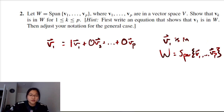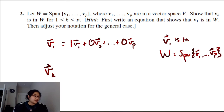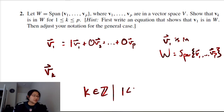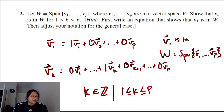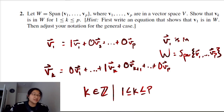In general, we can write v_k = 0·v₁ + ··· + 1·v_k + 0·v_{k+1} + ··· + 0·v_p, which shows that v_k is in W as well. This confirms that every spanning vector is contained in the span.